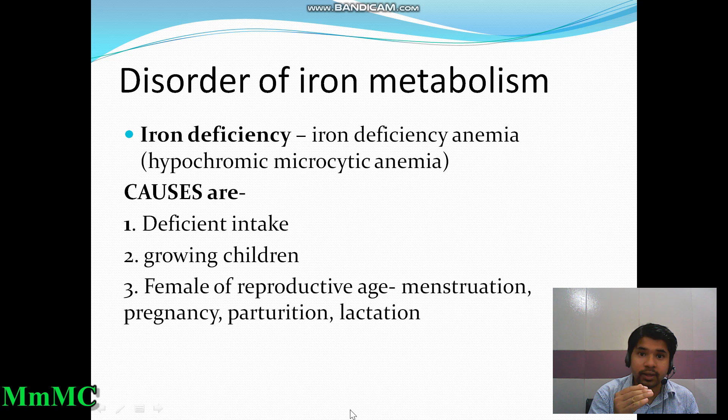Microcytic means the cell size is decreased — 'micro' means small, 'macro' means large. This condition is called hypochromic microcytic anemia, and it occurs due to deficiency of iron.